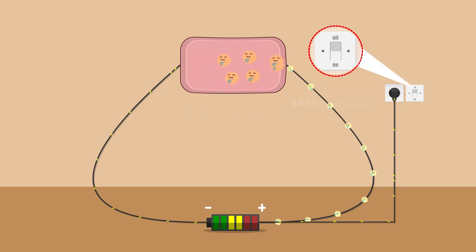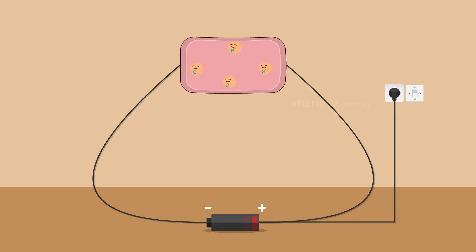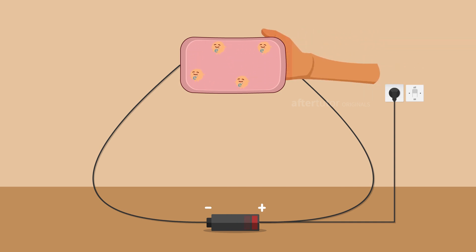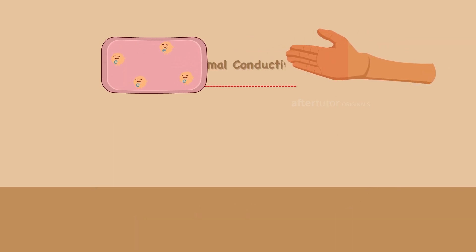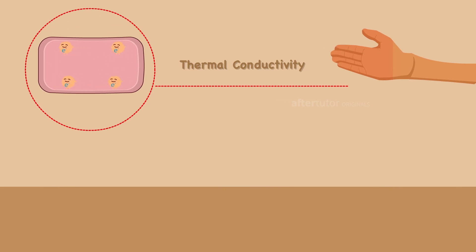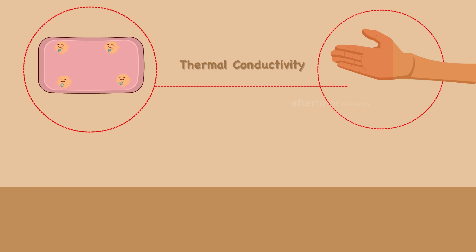After the test, turn off the electric current. Immediately, when you touch the metal with your hands, the heat gets transferred from the metal to your hands. This defines thermal conductivity — the heat that gets transferred according to the size of the object.